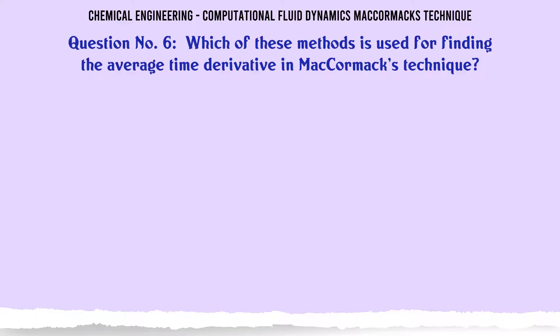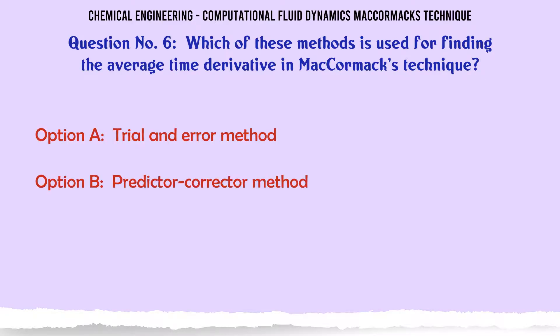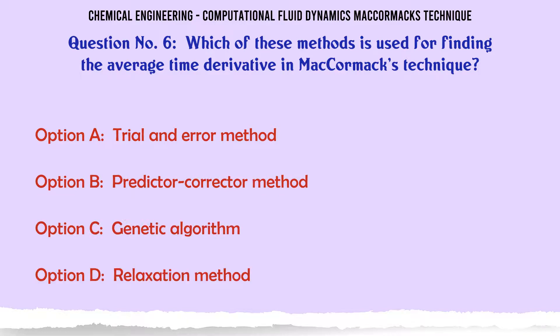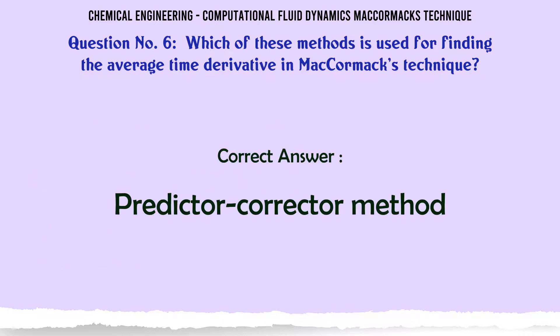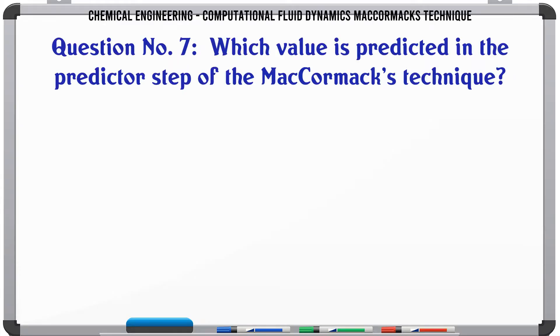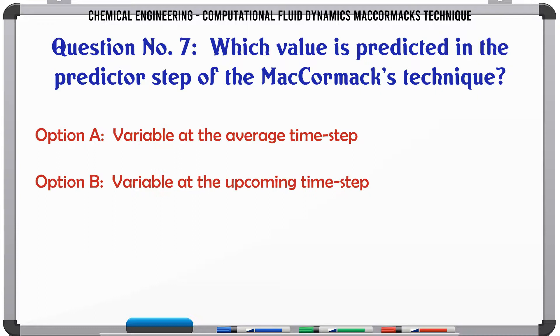Which of these methods is used for finding the average time derivative in the MacCormack technique? A. Trial and error method. B. Predictor-corrector method. C. Genetic algorithm. D. Relaxation method. The correct answer is the predictor-corrector method.